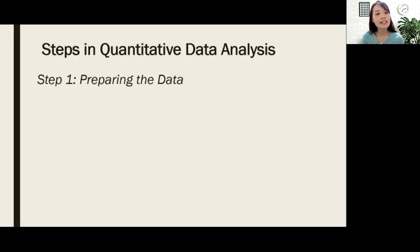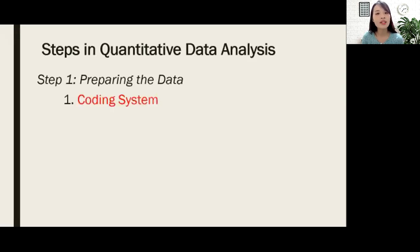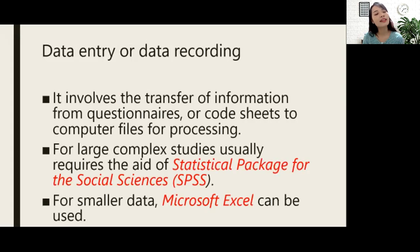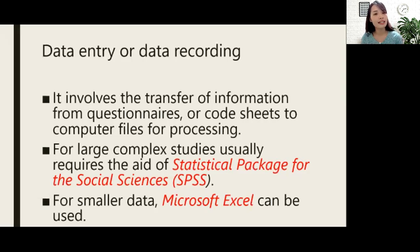The first step in quantitative data analysis is to prepare your data using a coding system. When we use a coding system, we convert words, images, or pictures into numbers so they become suited for any analytical procedures. Data entry or data recording means you transfer information from questionnaires or code sheets to computer files for processing.